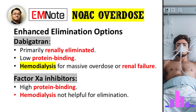You mentioned that elimination routes vary. Does this mean we have options for enhanced elimination for certain drugs? Absolutely. Given that dabigatran is primarily renally eliminated and has a low protein binding profile, hemodialysis can be an effective way to remove the drug in cases of massive overdose or renal failure. However, for the factor Xa inhibitors, which have high protein binding, hemodialysis is not a helpful strategy for enhanced elimination.